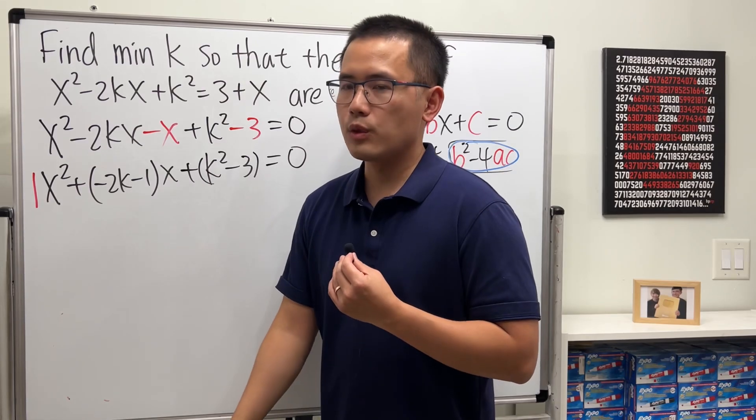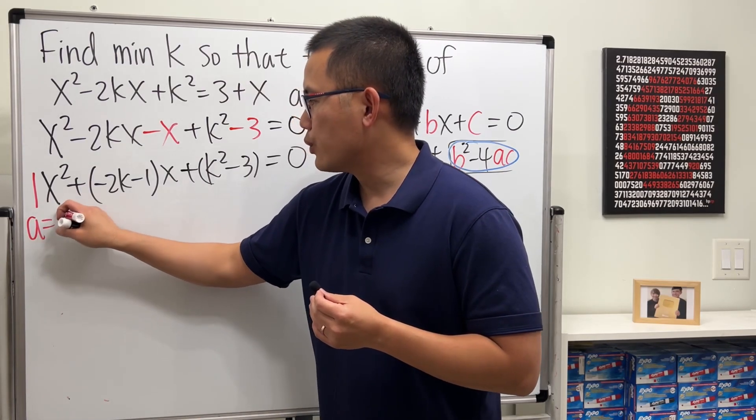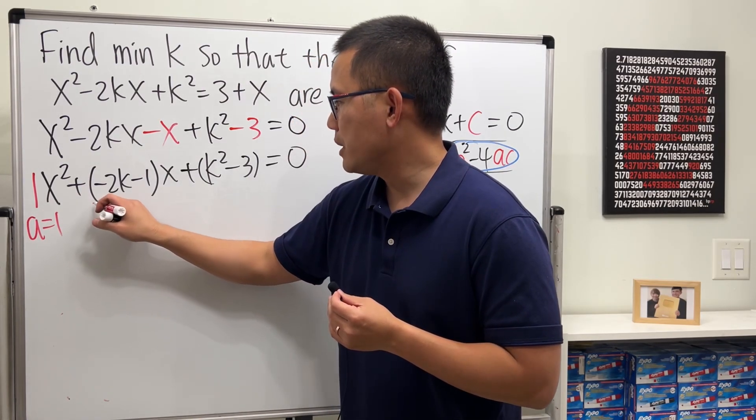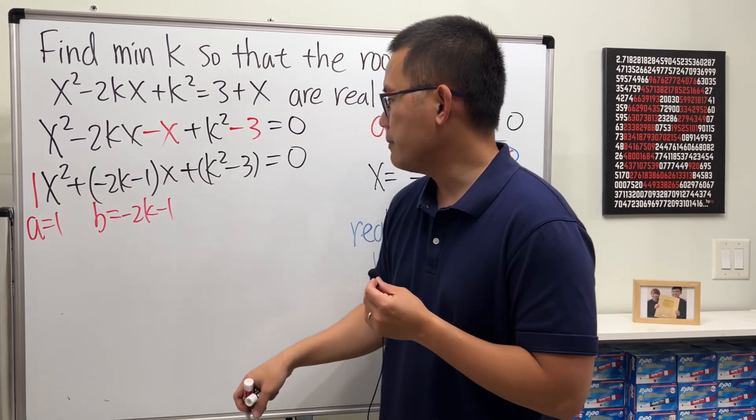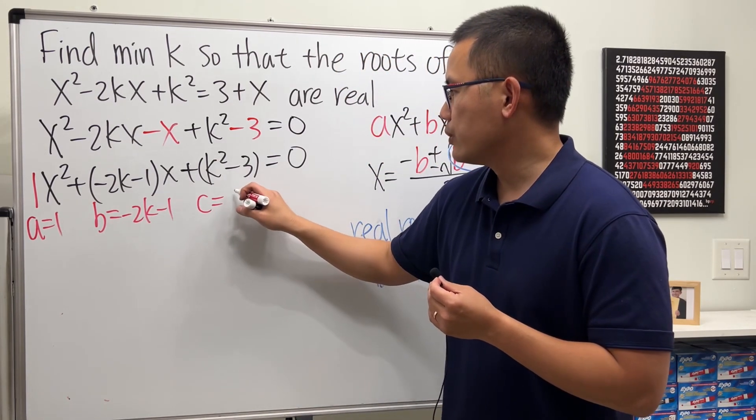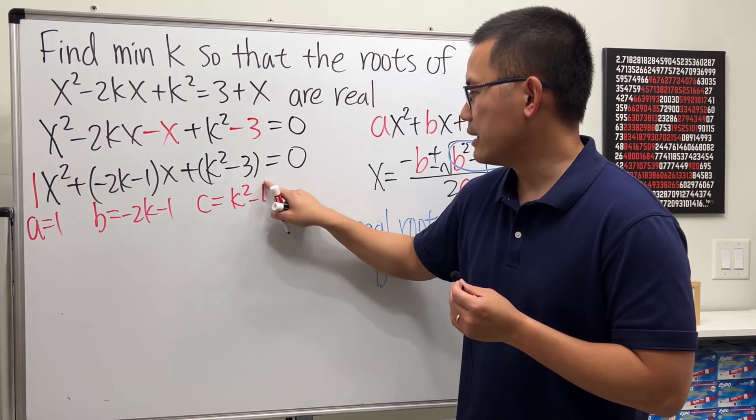This is like 1x² so a is equal to 1. And then this right here is b, which is negative 2k minus 1. And c is equal to k² - 3.